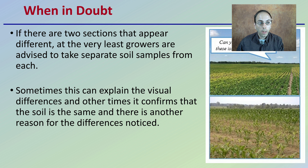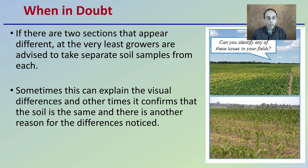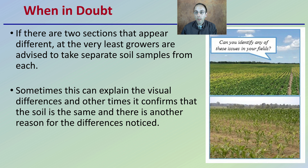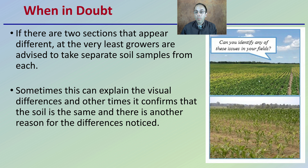When in doubt, if there are two sections that you're evaluating and they appear to be different, at the very least, growers are advised to take separate soil samples for each. Can you identify any of these issues within your field? As we see here, this kind of yellowing banding that's occurring — sometimes this can be explained by visual differences, and other times it confirms that the soil is the same and that there's another reason for the differences noticed. When comparing two sections, it might be good to take a soil test from each. If the results come back the same, it might be a water issue, or it could be a different kind of soil vein that runs through.